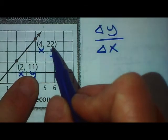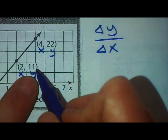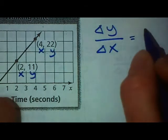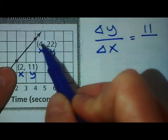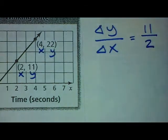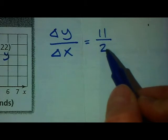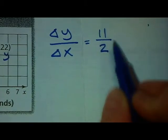If you're not sure, take 22 minus 11 and the change in y is 11. The change in x to get from 2 to 4 you're going up 2. So now we want our unit rate. All you need to do is take top divided by bottom. When you take 11 divided by 2 you end up getting 5.5.